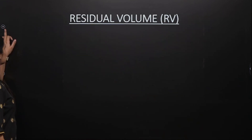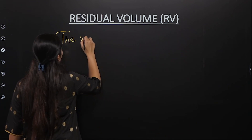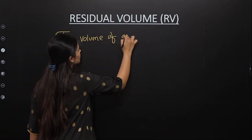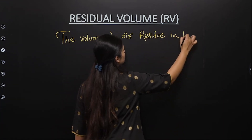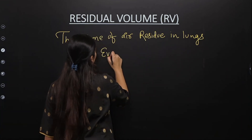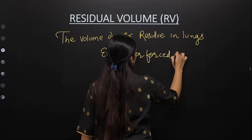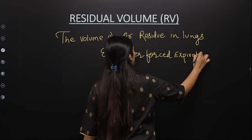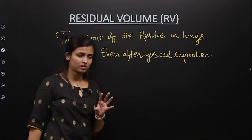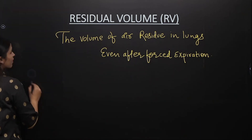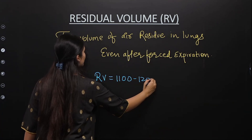The next volume is the residual volume. The volume of air that remains in the lungs even after forced expiration — no matter how hard you expire, this volume will stay inside your lungs. The value of residual volume equals 1100 to 1200 milliliters.